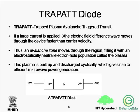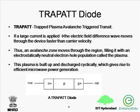The TRAPATT diode, that is the trapped plasma avalanche triggered transit diode, uses the word plasma because in this device the electron-hole plasma is initiated during the transit of the avalanche zone. The structure is N+, P, P+ between the anode and the cathode. If a large current is suddenly applied, the electric field difference wave moves through the device faster than the carrier velocity. Thus the avalanche zone moves through the region, filling it with an electrostatically neutral electron-hole population known as a plasma. The plasma is built up and discharged cyclically, which gives rise to efficient microwave power generation.